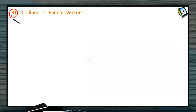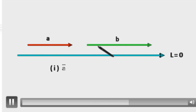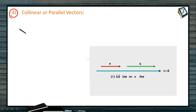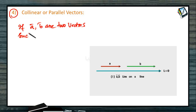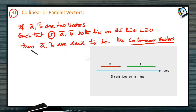Collinear or parallel vectors can be defined in three senses. The first case: if there is a line L equal to zero and two vectors a-bar and b-bar both lie on that line, then a-bar and b-bar are said to be collinear vectors.